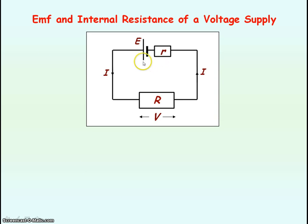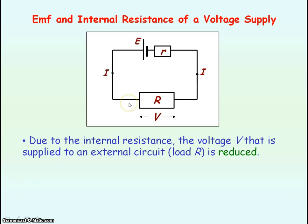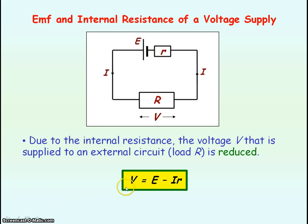If we now connect our cell to a load resistor, given by the symbol capital R, the voltage across the load resistor will not equal the EMF due to some of the voltage being lost inside the cell due to internal resistance. We can express this mathematically, where V is known as our terminal PD, our output voltage from the cell, which equals the EMF of our cell minus the voltage lost inside the cell due to internal resistance.